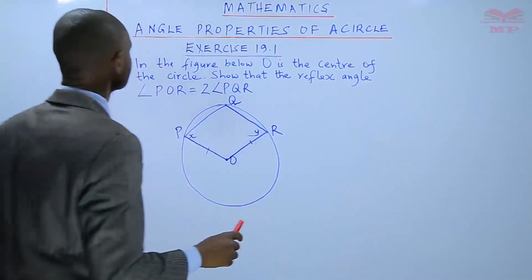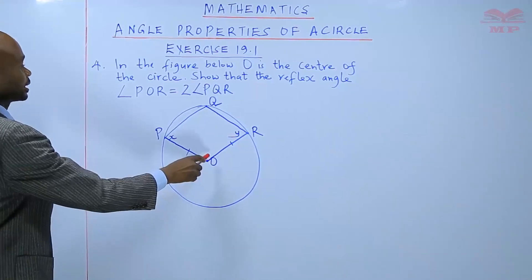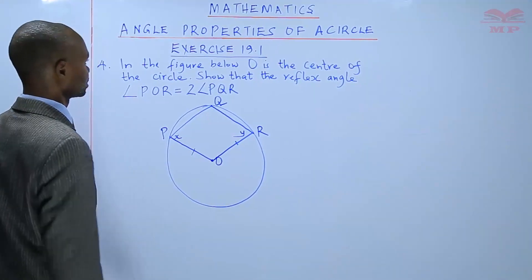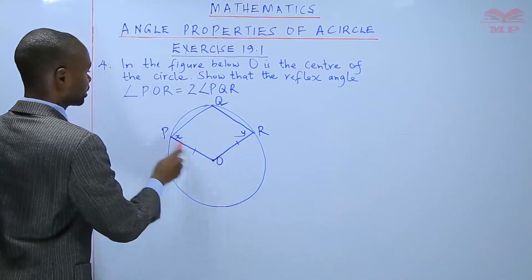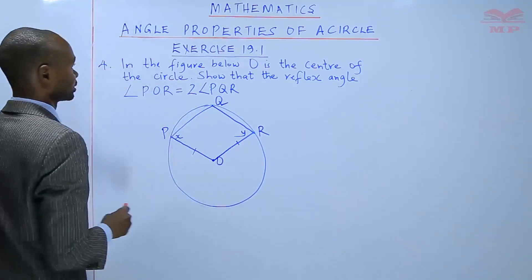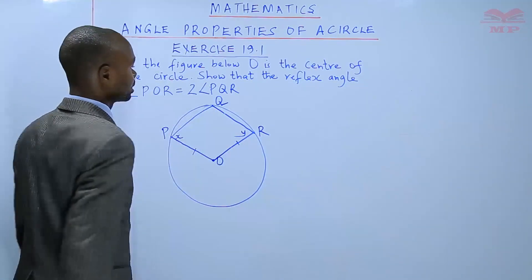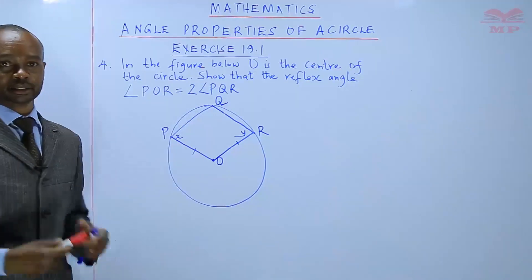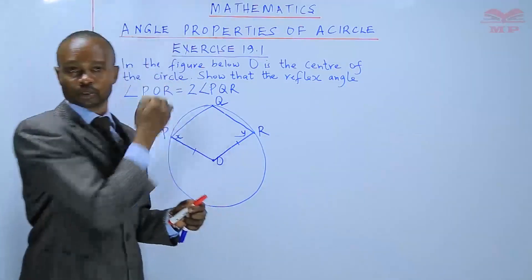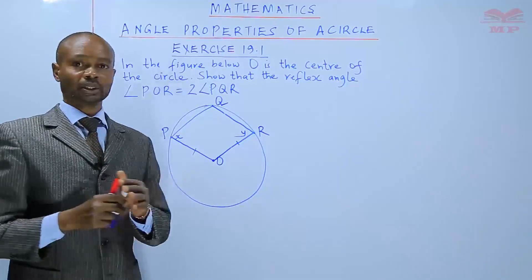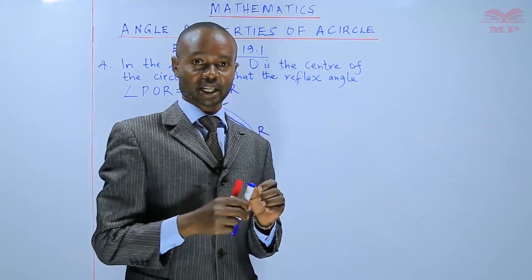That is the question. In the figure below, O is the center of the circle. Show that the reflex angle POR is twice angle PQR. Before we go to solving the equations, we have to get the underlying concepts before we get the angles.